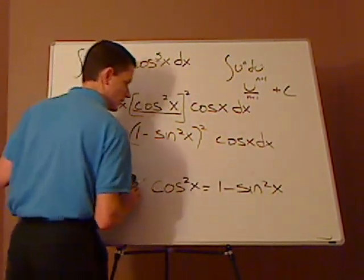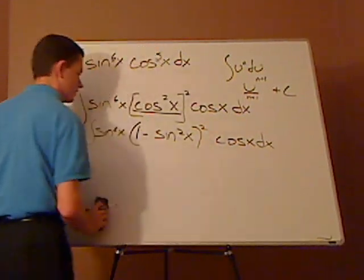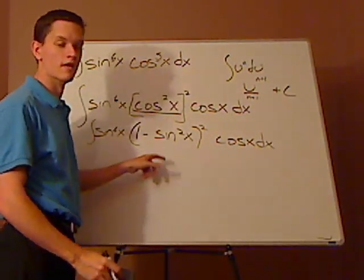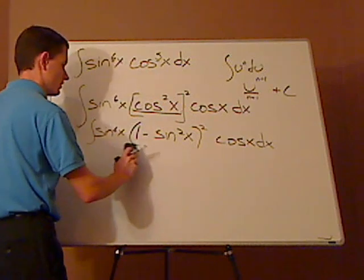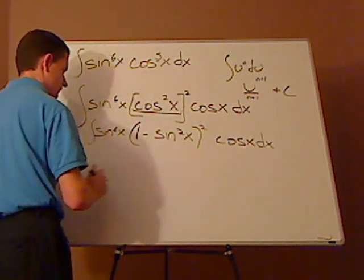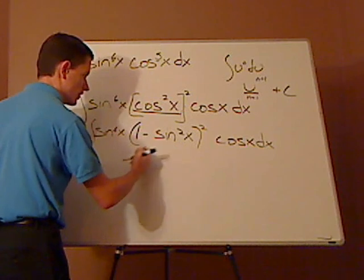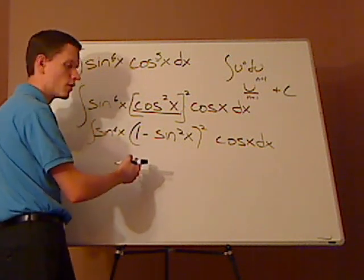Alright, let's erase this. Alright, now it's a matter of foiling. Now, this right here, if you end up foiling, it's also what's called a perfect square.